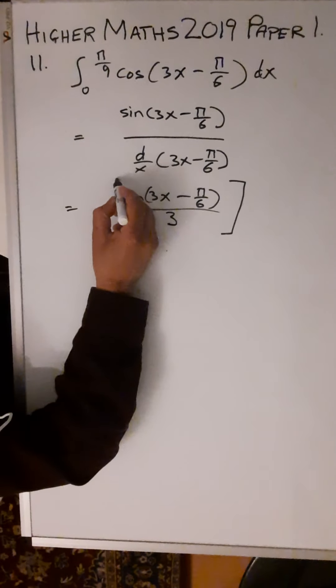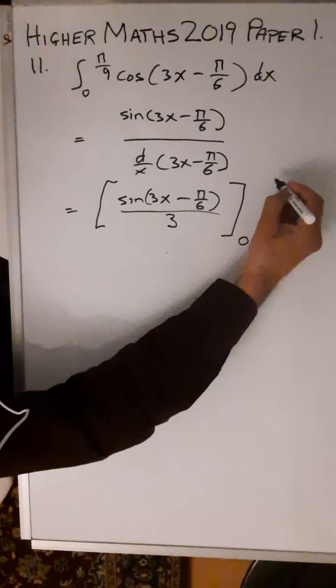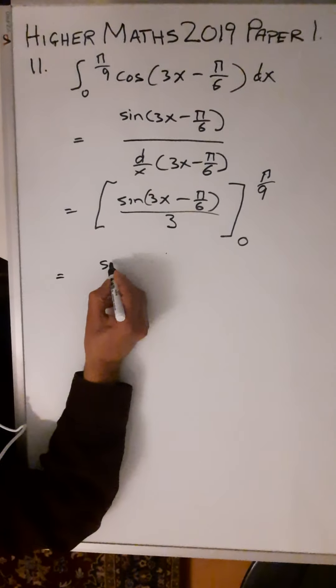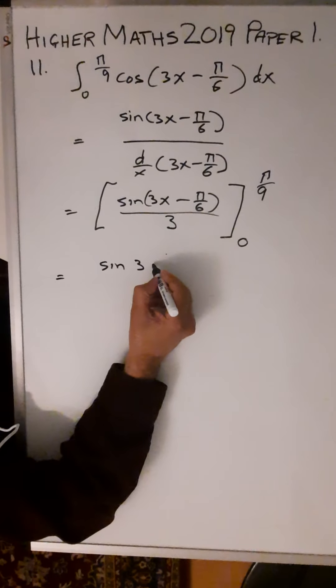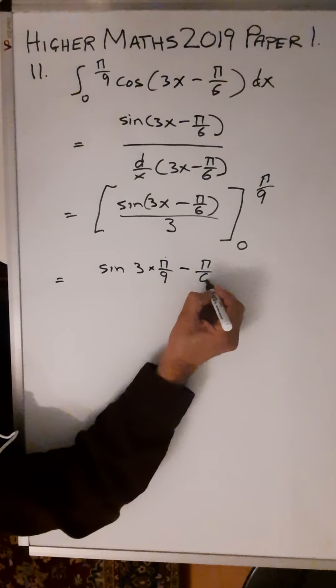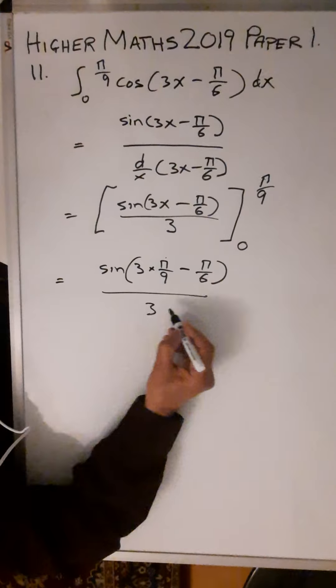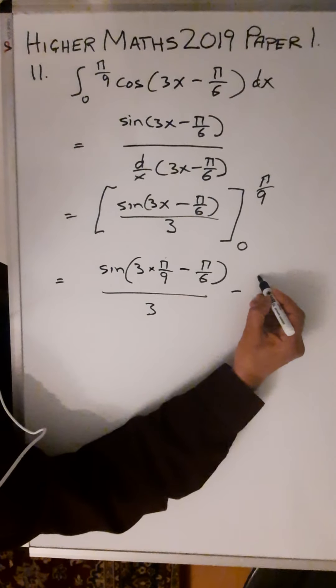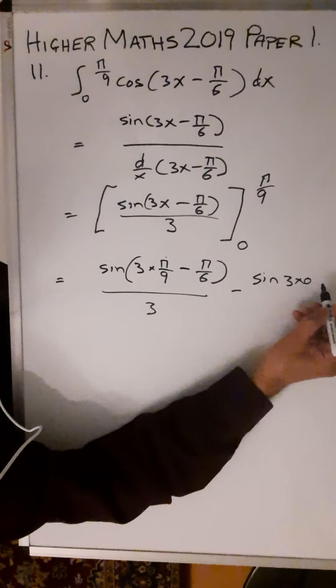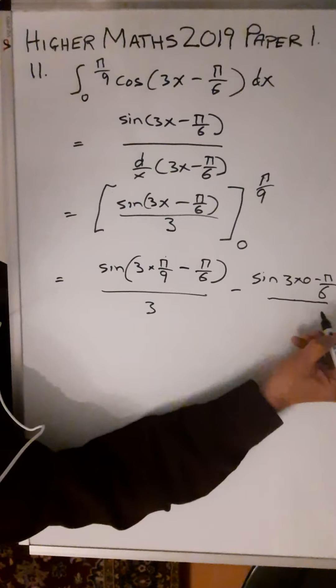That's the integral done. Now you're going to evaluate this from 0 to π/9. Sin(3 × π/9 - π/6)/3 minus sin(3 × 0 - π/6) all over 3.